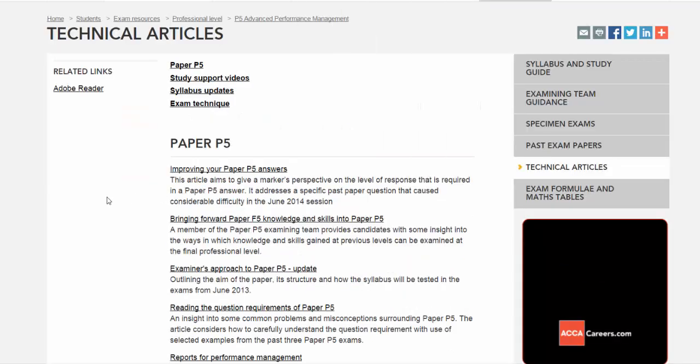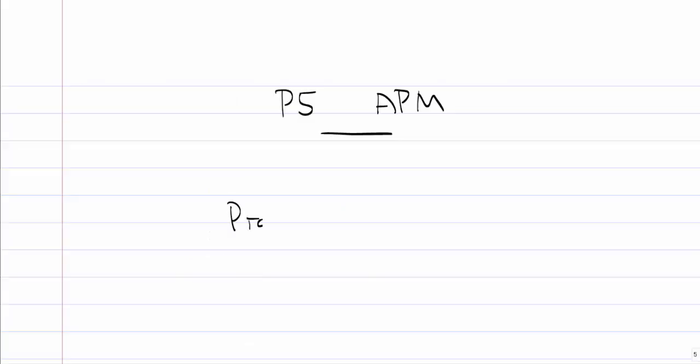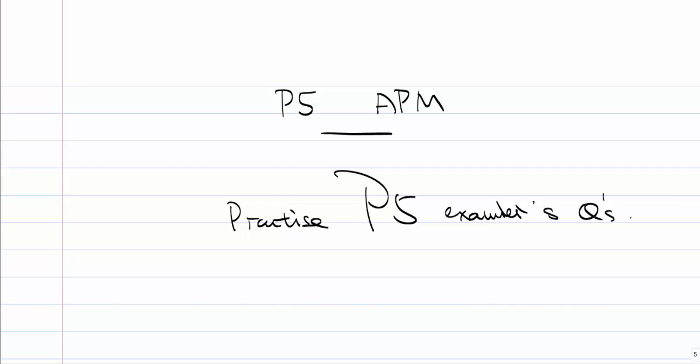Some of the other articles related to the P5 are very, very good. There'll be some support videos and service updates. But from my perspective, the key to pass the P5 is to practice the P5 examiner's questions. There's no other way to pass the P5 without practicing the examiner's questions. The examiner has his own style, and the scenarios are quite consistent from each sitting, as are the answers. So make sure you practice those questions, cover the syllabus, and you can pass the P5 easily. If you need our help, contact us at www.globalapc.com. Thank you for listening and good luck with your P5 studying.